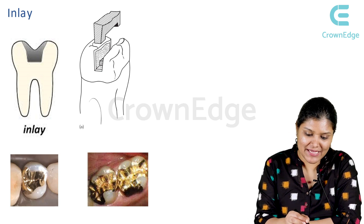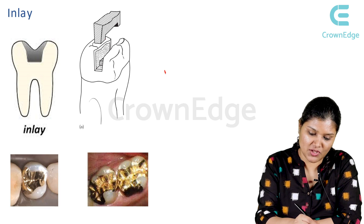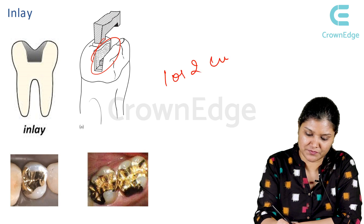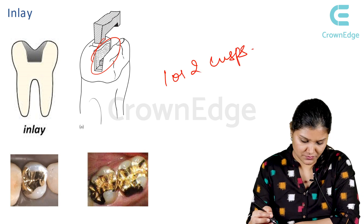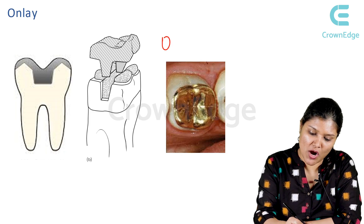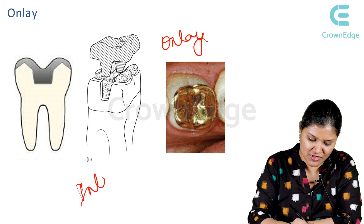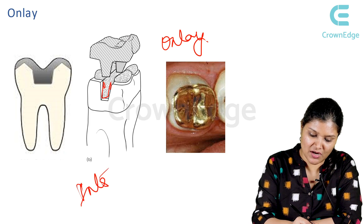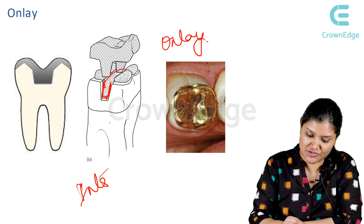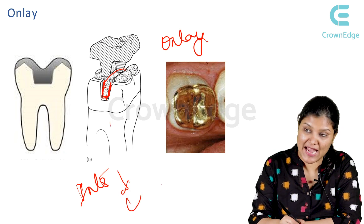An inlay is a restoration which covers the occlusal surface and usually one or two cusps. An onlay is something which covers all cusps. It's an intracoronal restoration, meaning it's within the tooth because it covers the occlusal surface and goes inside. So it is intracoronal and is cemented and lab processed.